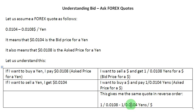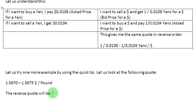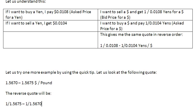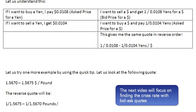Now to give us some more practice, let us look at one more quotation and try to write the reverse quotation for it. The quotation is 1.5670-1.5675 dollars to a pound. This means that if I want to buy a pound, I am going to spend 1.5675 dollars for it, and if I have a pound to sell, I am going to get 1.5670 dollars for it. To write this in the reverse format — pounds to a dollar — I write 1 over 1.5675 as the bid price, a dash, and then 1 over 1.5670 as the asked price in pounds for a dollar.